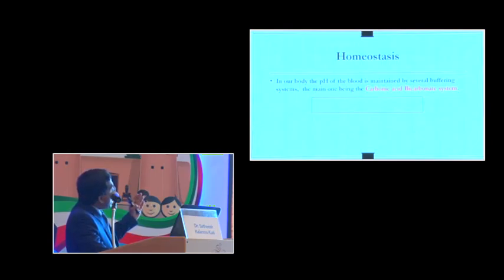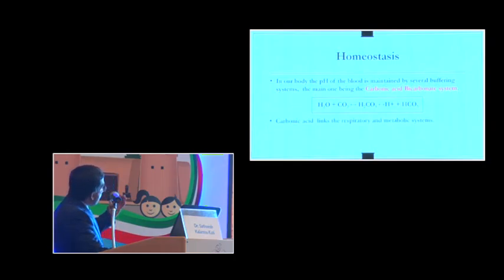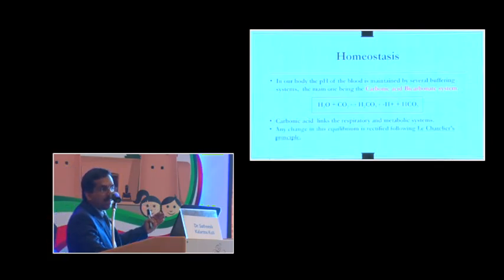The body is maintained in homeostasis. For this to be maintained, several buffering systems are coming into action. The carbonic acid bicarbonate system is the most commonly used. This homeostasis is represented by the dynamic equilibrium of H2O plus CO2 forms carbonic acid, which dissociates to H plus and HCO3. This is constantly changing, a dynamic equilibrium to maintain the blood pH within the normal range. This carbonic acid links the respiratory and the metabolic systems. Any change in this equilibrium is rectified following Le Chatelier's principle.